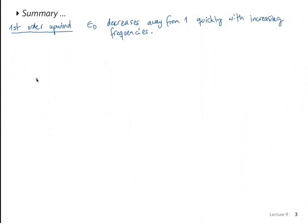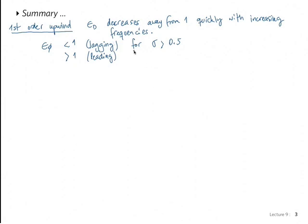This meant that these schemes were completely unusable. We saw a wave packet with four periods get damped catastrophically in our demo. For epsilon phi, we saw it was less than 1, meaning a lagging error, because epsilon phi is the numerical velocity divided by the exact convection velocity. If this is less than 1, the numerical velocity is slower. This happened for Courant numbers larger than 0.5, and it was greater than 1 — a leading error — for sigma less than 0.5, and equal to 1 for sigma equal to 0.5.